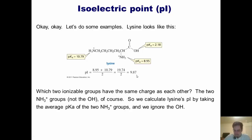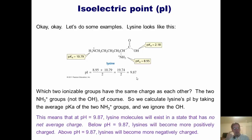So once again, what in the holy bleep does that mean? It means that at 9.87, lysine molecules in solution will exist in a state that has no net average charge. Below pH 9.87, lysines will become more and more positively charged. And above pH 9.87, lysines will become more and more negatively charged. That's what it means.